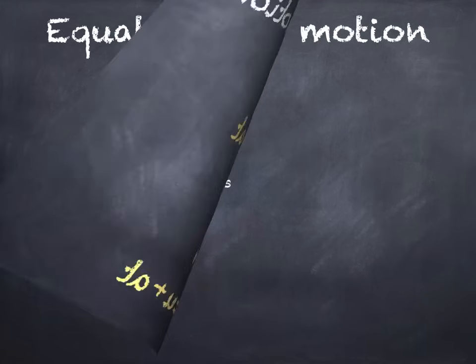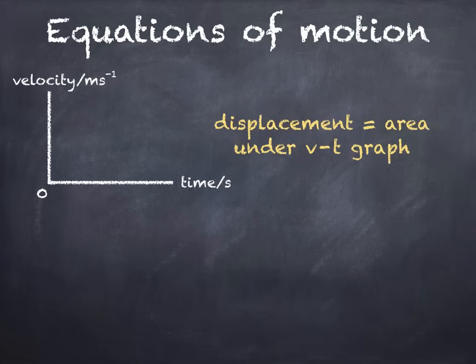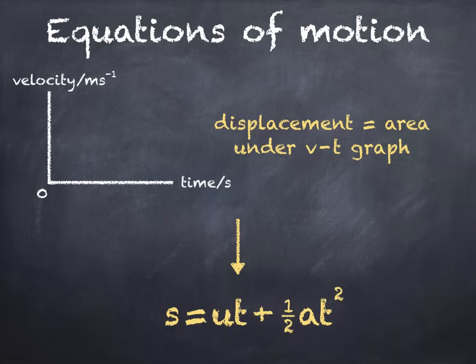Here's the second one. This one involves a velocity time graph, and something else we know from National 5, that displacement can be calculated by finding the area under the graph. We'll use this to derive the equation s equals ut plus half at squared.